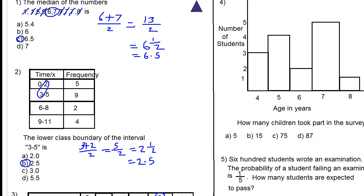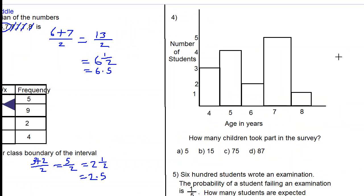Let's move on to number 4. We have a bar graph: number of students versus age in years. We're asked how many children took part in the survey. For each bar, this means three students took part - three students who are four years in age. This other bar means four students who are five years old took part.